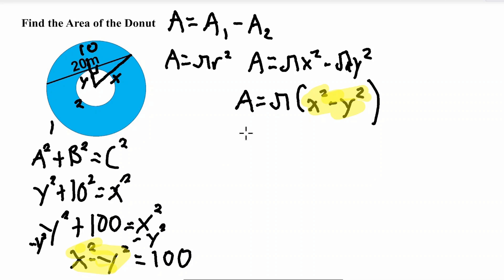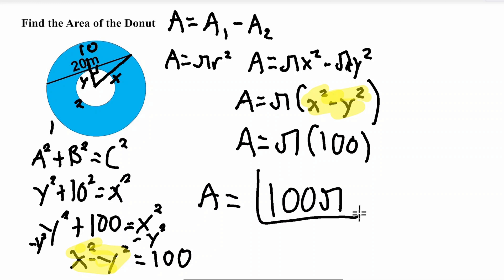So let's do that. Which means area is equal to pi times 100 as you can see. And we can rewrite that as area is equal to 100 pi, and that is our answer. That is our exact answer.